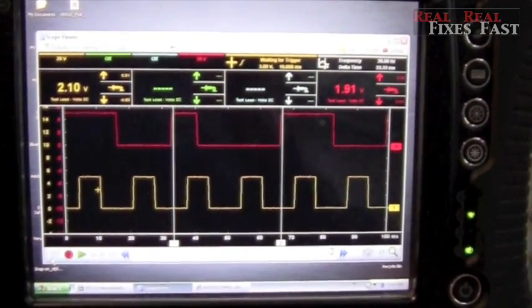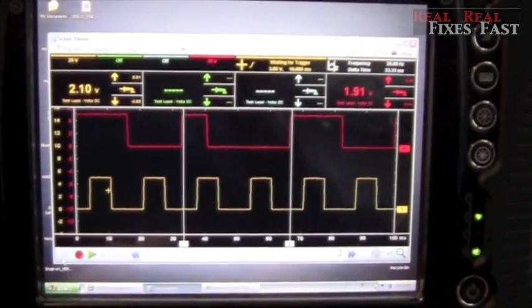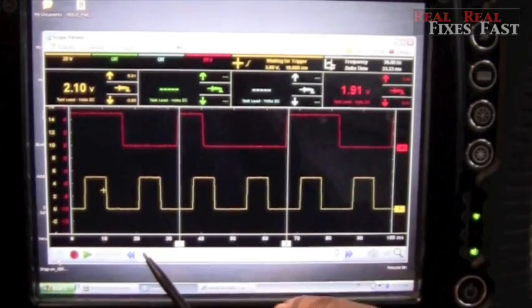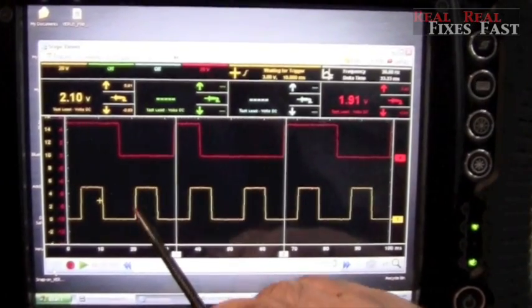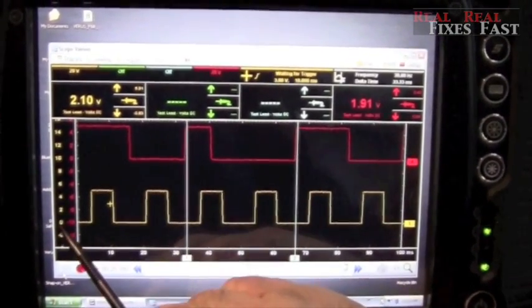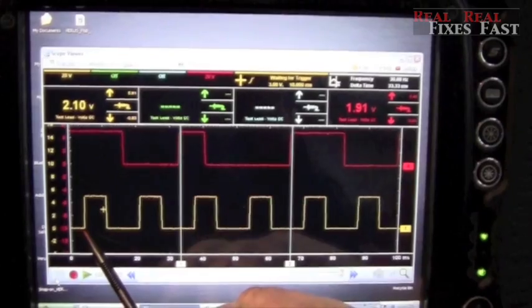Okay, we'll shut the car off. We froze this image. Now you can see this is with the car actually running. Now we've got a good clean on signal. We're reading zero volts. It's going all the way to ground.